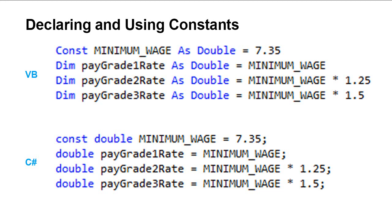In fact, if you try to change the value, you would get an error. Constants are declared very similar to variables, and in VB we simply replace the dim or dimension statement with the letters const for constant. So in this example here, I'm declaring minimum wage as a constant of type double and assigning a value of 7.35 to it.